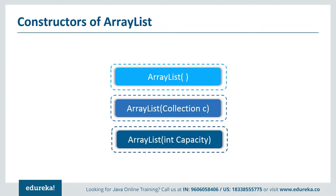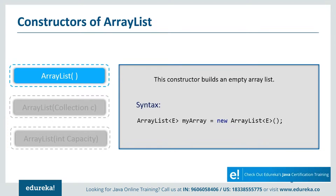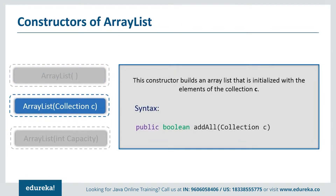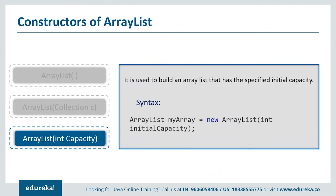Now let's see the various constructors supported by Java ArrayList. First, ArrayList(): this constructor builds an empty ArrayList. The reference has an initial capacity of 10 cells, and the capacity will be increased as needed as references are added to the list. Next, ArrayList(Collection c): this constructor is used to add all the elements of a specified collection C to the current ArrayList. Next, ArrayList(int capacity): this is used to build an ArrayList that has a specified initial capacity. It can expand beyond this capacity if you add more elements. Now let's see a small example to understand how and where these constructors are used.